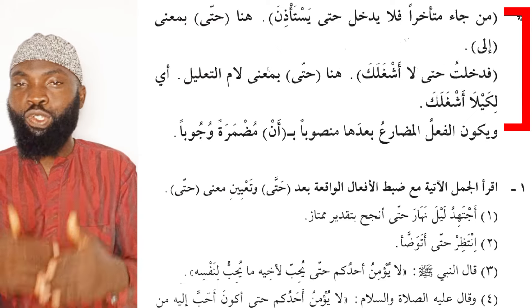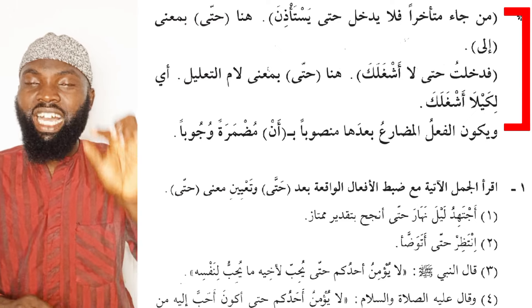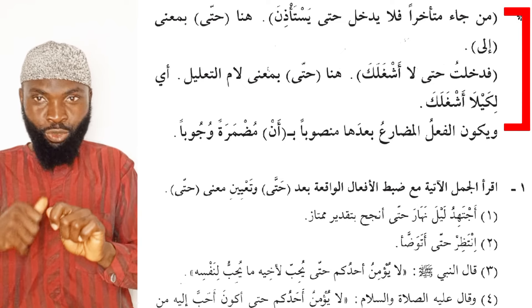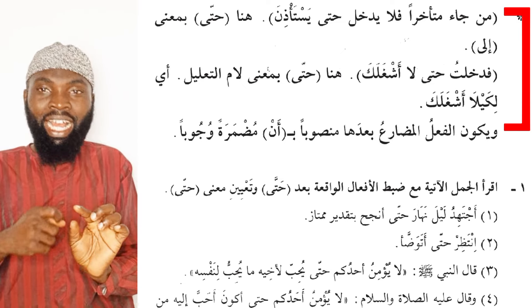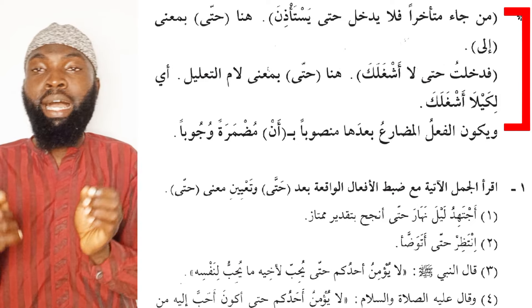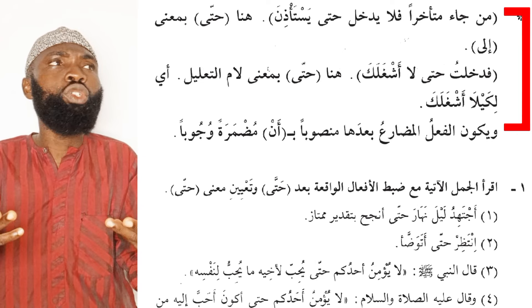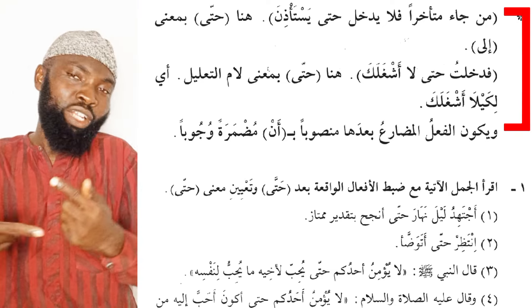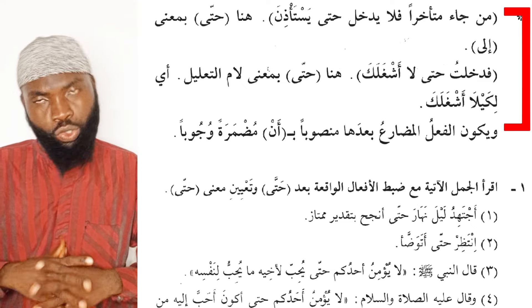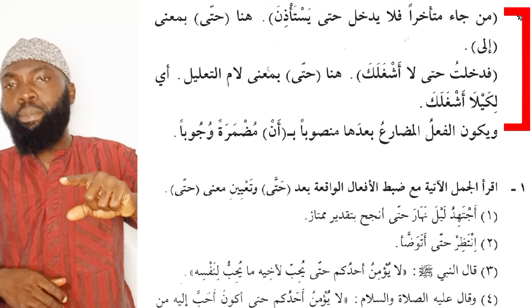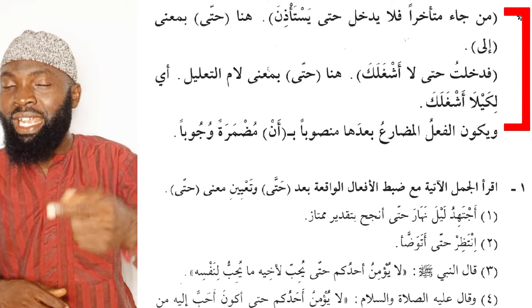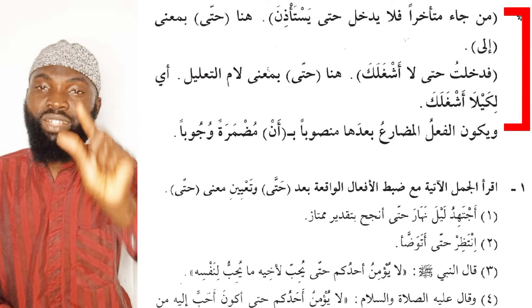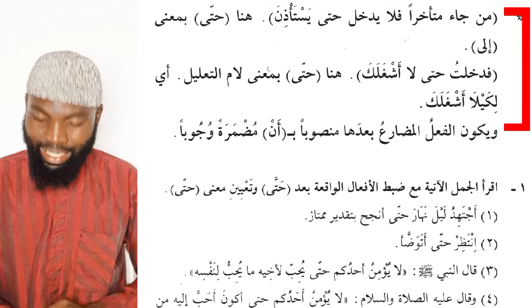In the second sentence, fadakholtu hatta la ashgolak — I entered in order not to distract you. The word Hatta here means 'in order,' which is called La Mutalil — the lam of reason, showing the sabab, the reason for performing an action. This is also equivalent to 'ke la ashgolak.' The word ke, whenever it appears before a verb, also makes it carry fatha. That is why we have hatta la ashgolak, with ashgolak carrying fatha.